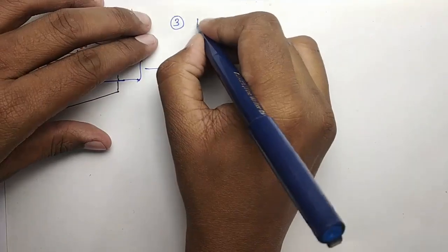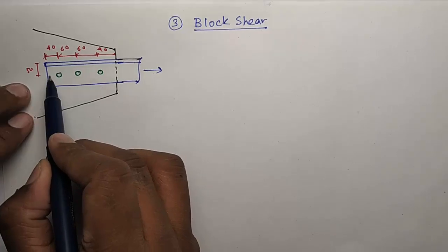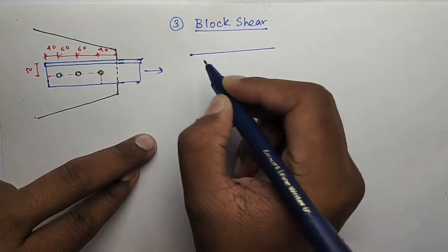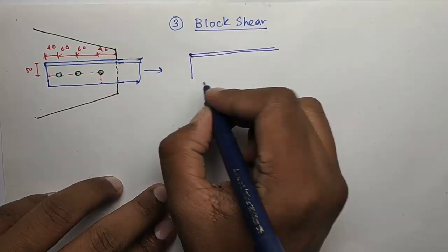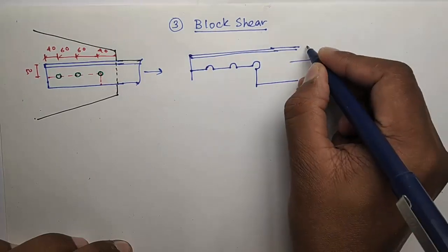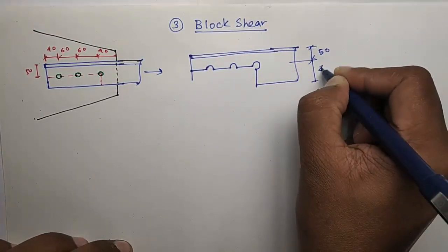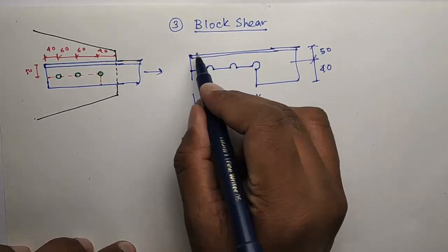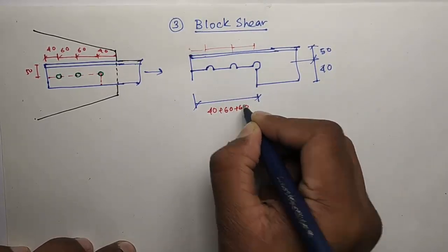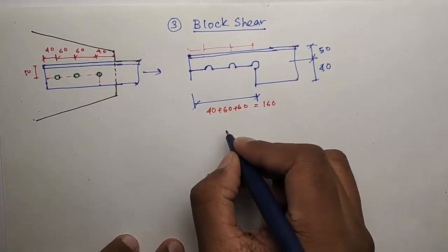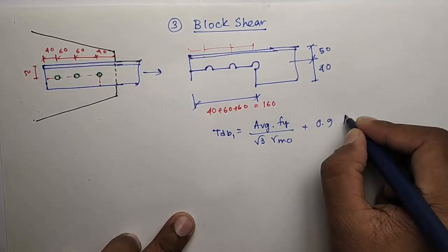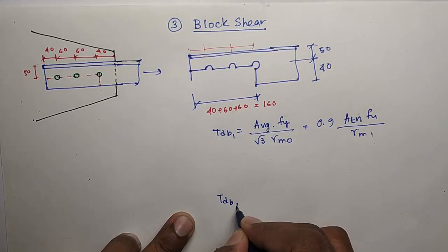Number 3 is block shear. This section may fail by this line. After failure, the section will be like this. This is 50, this is 40, this distance is 40, 60, 60, so this is 160. The formula for block shear is TDB1 equals... and TDB2 is...